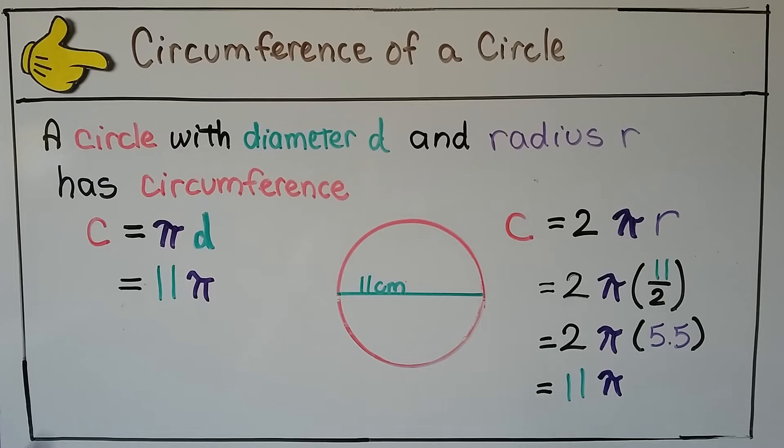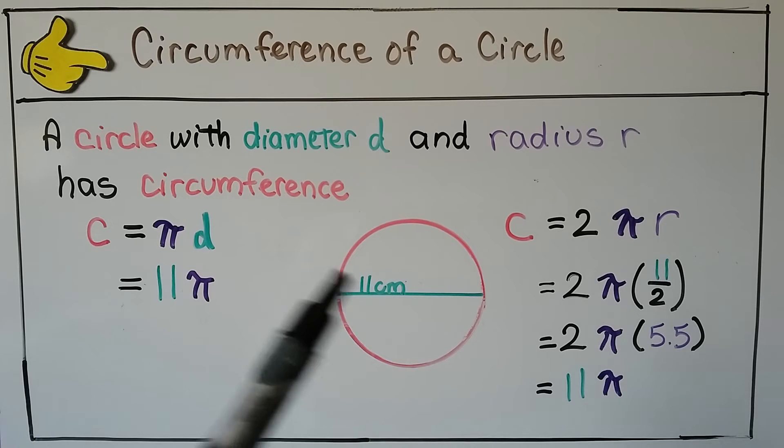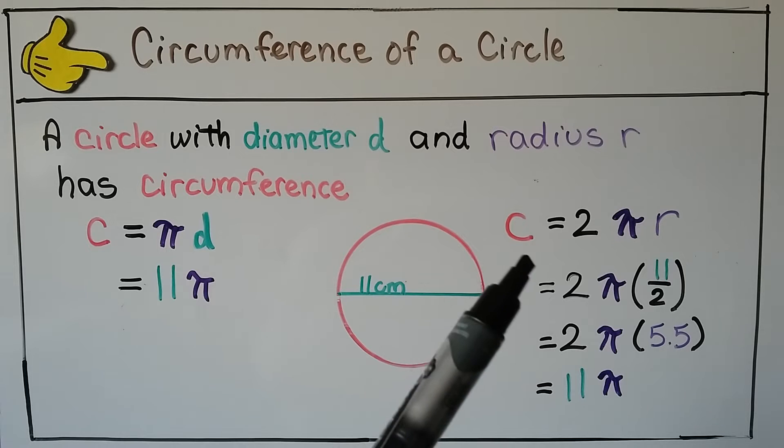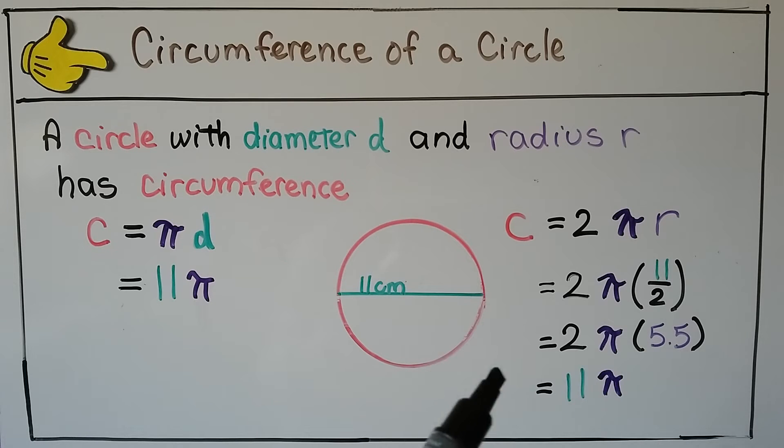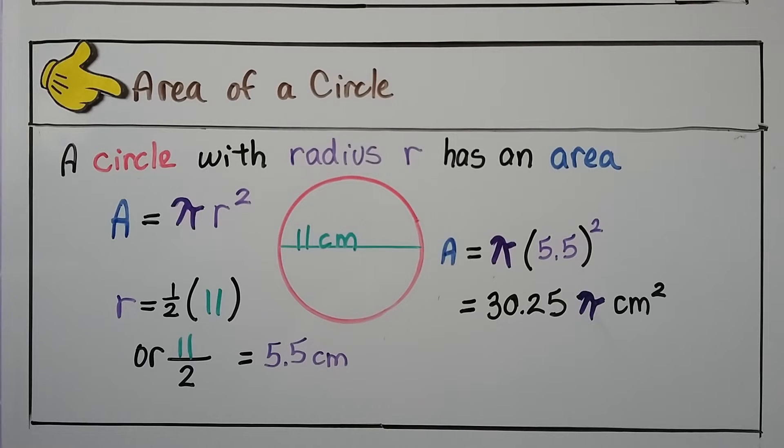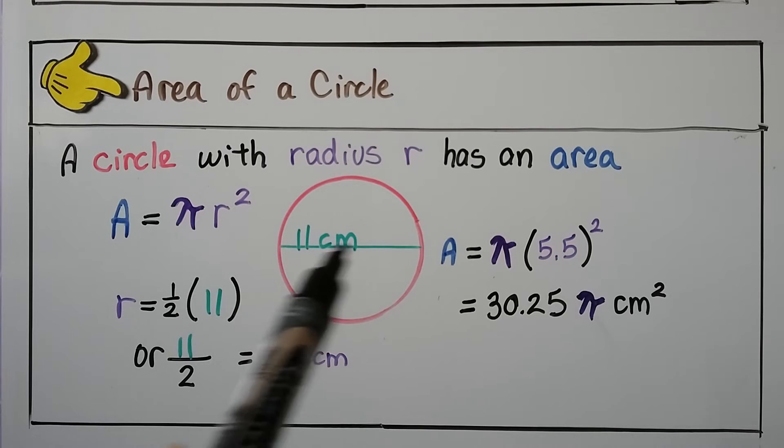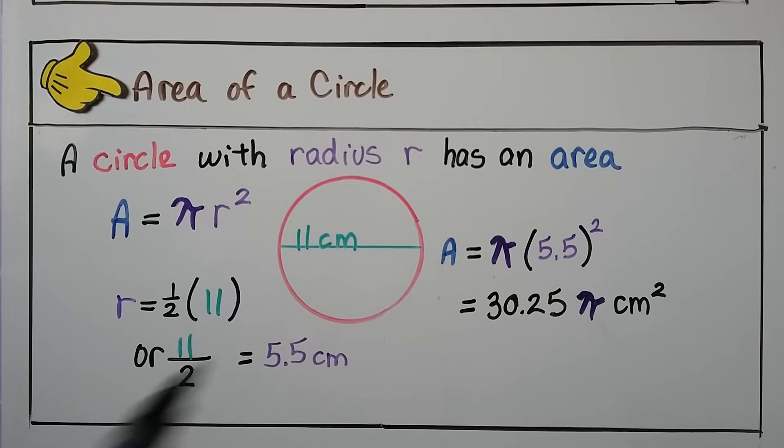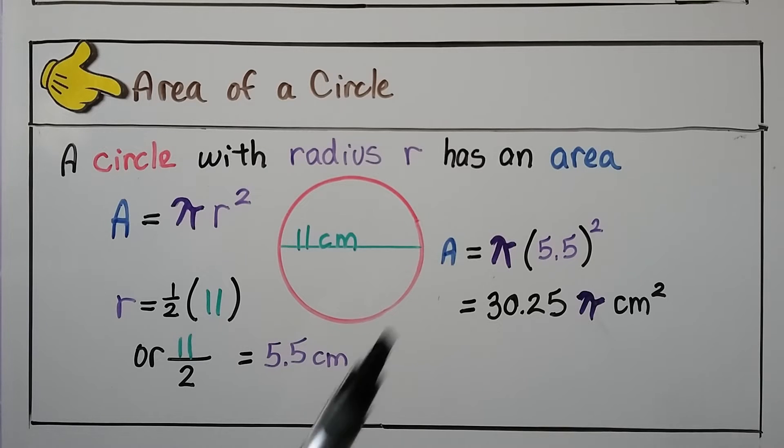A circle with diameter d and radius r has circumference equals pi times diameter. So this would be 11 times pi. We can also say circumference equals 2 pi r. Our 11 divided by 2 gives us radius 5.5, and that would be 2 times pi times 5.5, which is also 11 pi. For the area of a circle, a circle with radius r has area equals pi times r squared. We have a diameter of 11 centimeters, so we get 5.5 centimeters. Substitute it into the formula as pi times 5.5 squared, which gives us 30.25 pi centimeters squared.